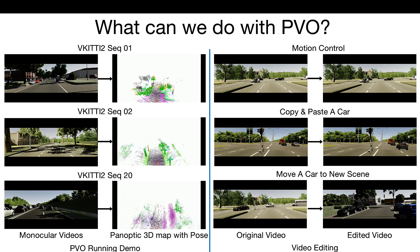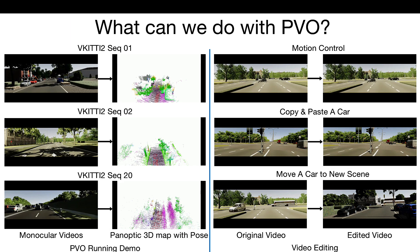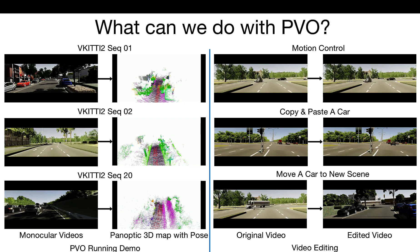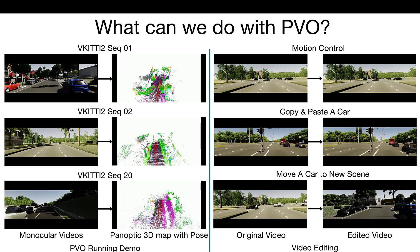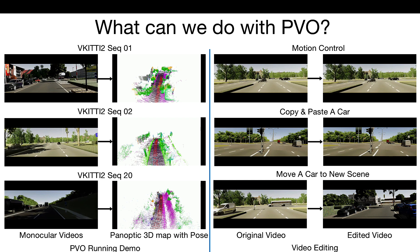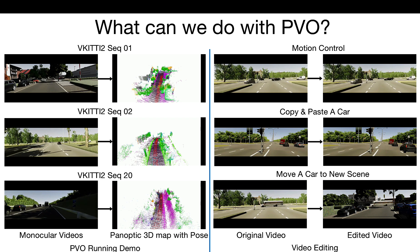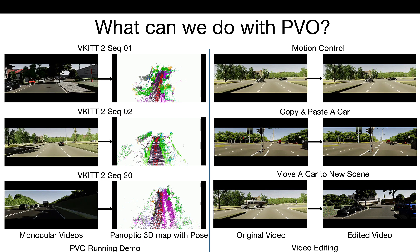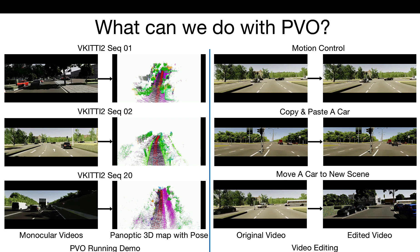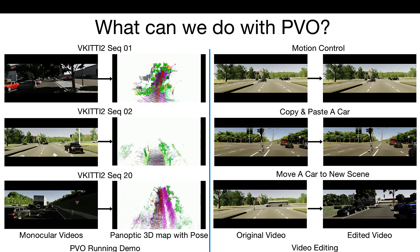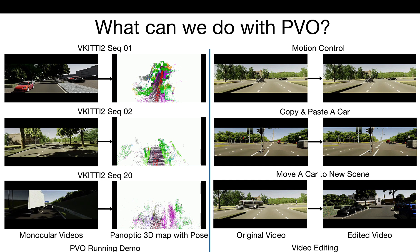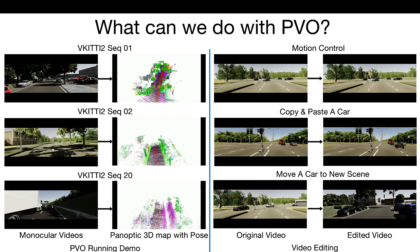Before talking about PVO, let's first look at what we can do with it. The left side shows the running demo of PVO. Given a monocular video, PVO can simultaneously estimate the camera pose and reconstruct a 3D map. The panoptic map here refers to panoptic 3D segmentation, including semantic segmentation and instance segmentation.